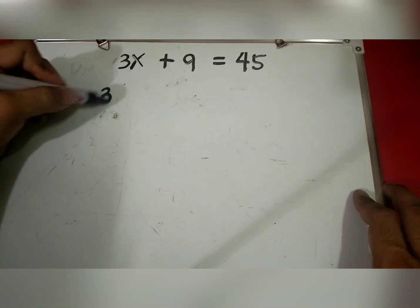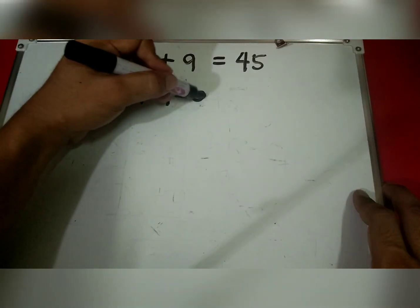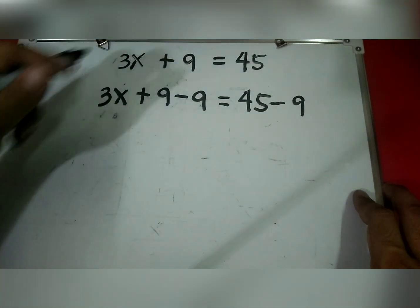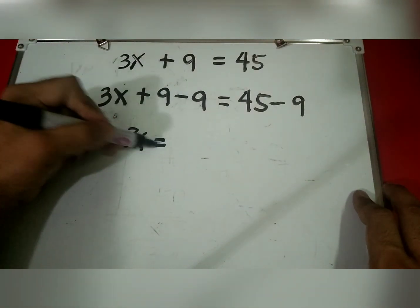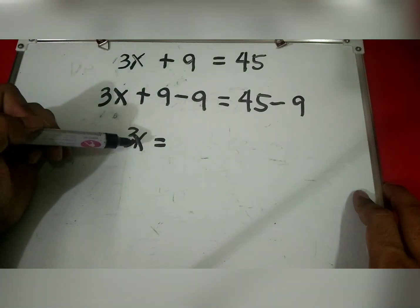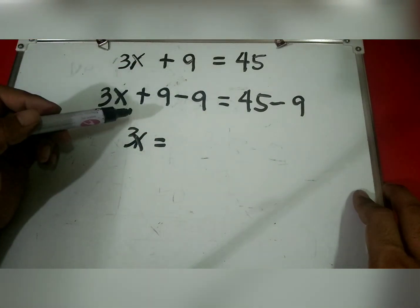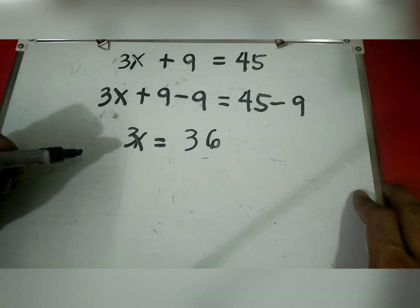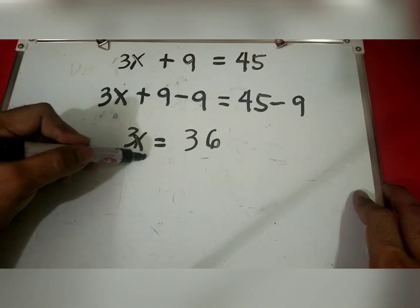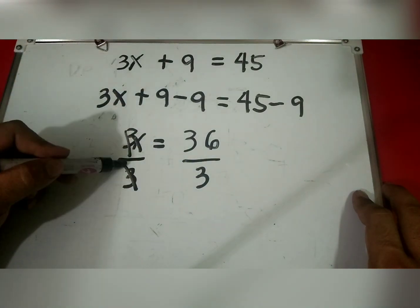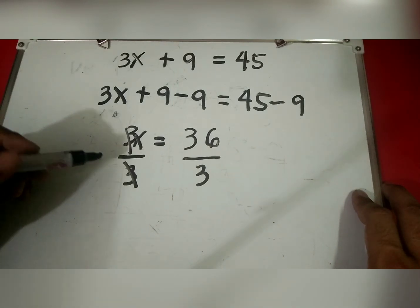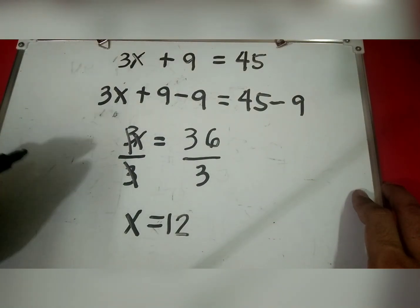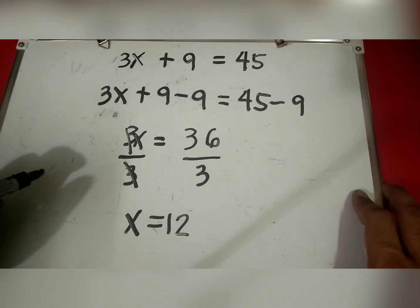To solve: start by subtracting 9 from both sides. So 3x plus 9 minus 9 equals 45 minus 9. Simplifying, we get 3x equals 36. Then, to solve for x, divide both sides by 3. So 3x divided by 3 equals 36 divided by 3, giving x equals 12. So each box cost 12 dollars.